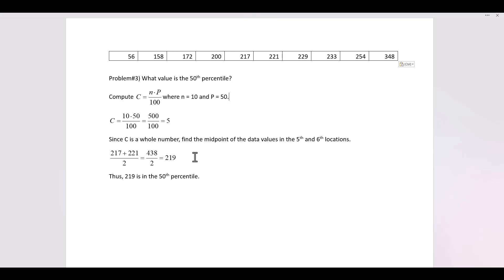If C is not a whole number, you round and then you count to get to the data value X. But if C is a whole number like this example here, you have to count over the number of spaces of C and one more and find the midpoint of the two values.